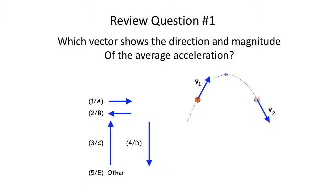Let's do one review question from last lecture on your own. Which vector shows the direction and magnitude of the average acceleration? I'm showing you the velocity vectors and asking about acceleration. Acceleration is the change in the velocity vector divided by time. Which direction is the acceleration? You have four choices, plus one option if none of those apply.